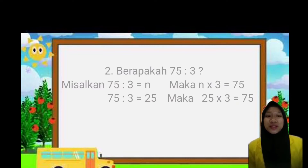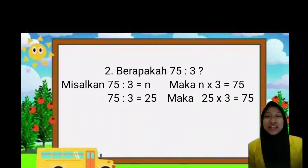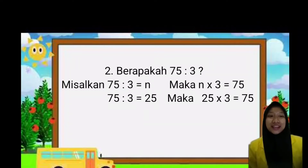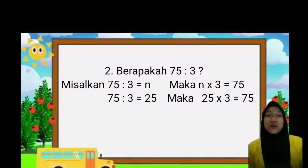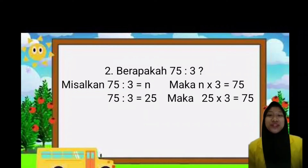Untuk soal berikutnya, 75 dibagi 3. Misal 75 dibagi 3 sama dengan N, maka N kali 3 sama dengan 75. 75 dibagi 3 sama dengan 25, maka dapat kita ketahui bahwa nilai N adalah 25, sehingga 25 dikali 3 sama dengan 75.